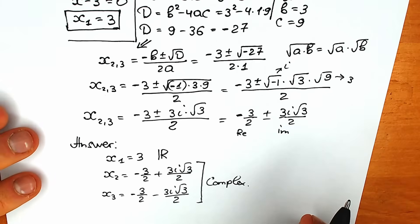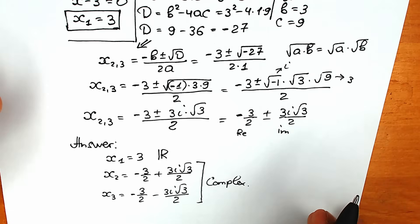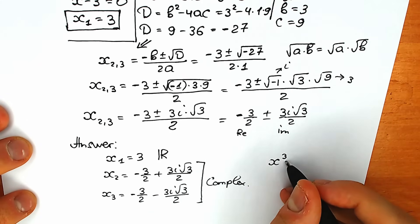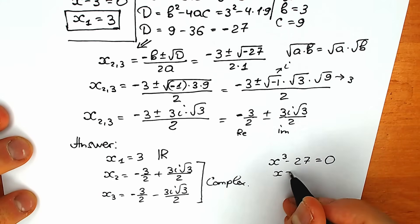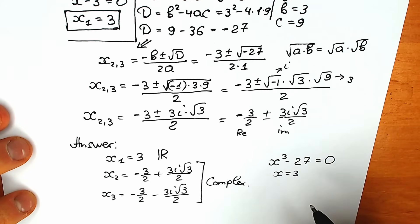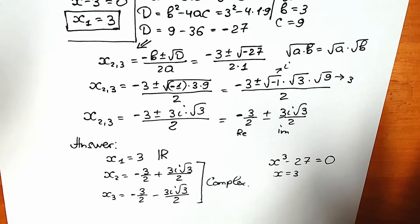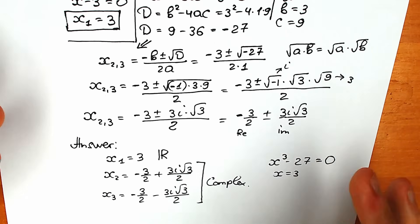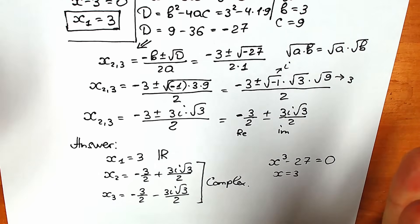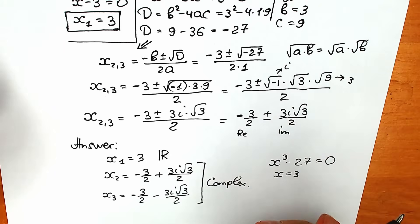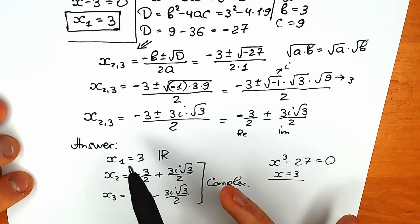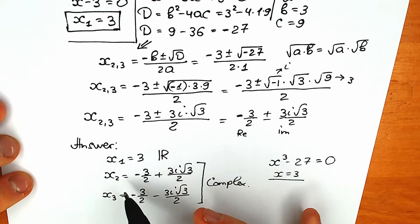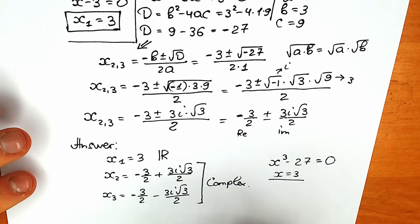You can see the point of intersection on the graph. Many students say x³ minus 27 equals 0, so x equals 3 right away — that's the inspection method. You can use inspection for checking, but not as a full solution. The complete solution requires finding all roots, including the complex ones.